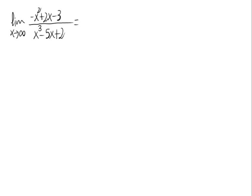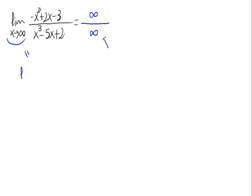We can see that we have a limit of a fraction of polynomials. By the limit properties, substituting x to infinity, the numerator would be infinite and the denominator would also be infinite. So this means that we have an indetermination of the type infinite divided by infinite.